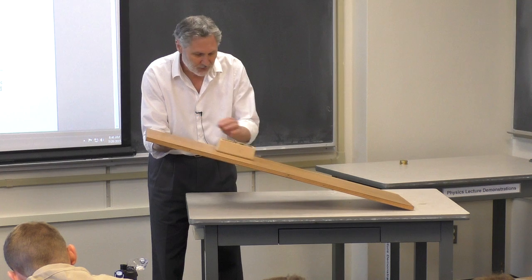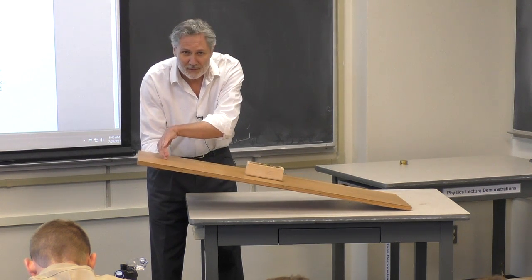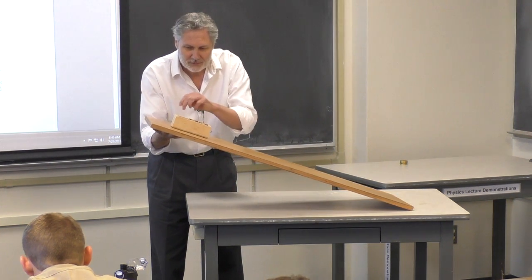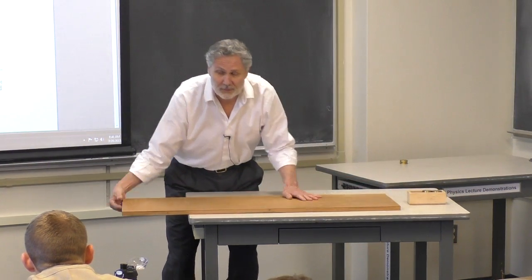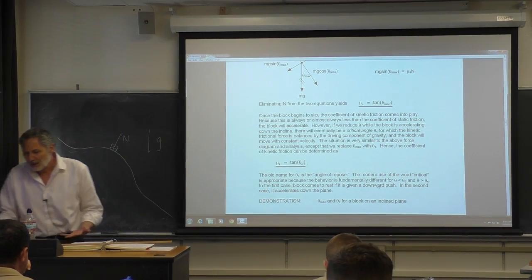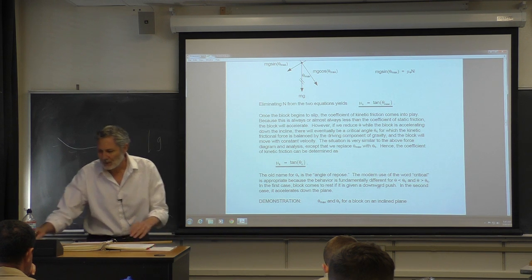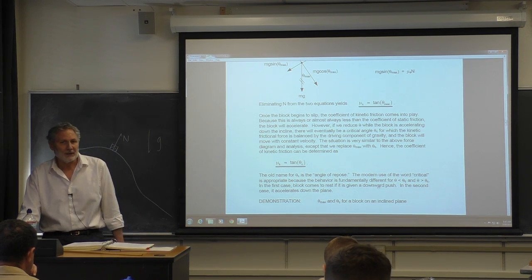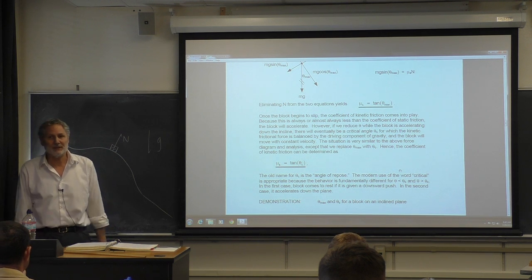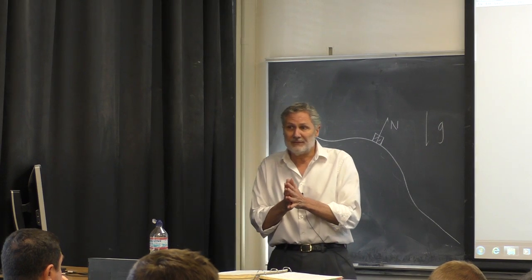This angle is naturally called the critical angle — though historically it was called the angle of repose. We use 'critical' because different behavior occurs for values above and below: below the critical angle the object comes to rest if given an initial velocity; above it, the object has positive acceleration. People use the word 'critical' for situations like this throughout physics — even in climate science, where there are critical temperature values above which drastically different things happen.